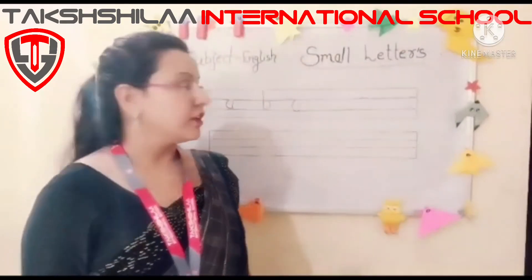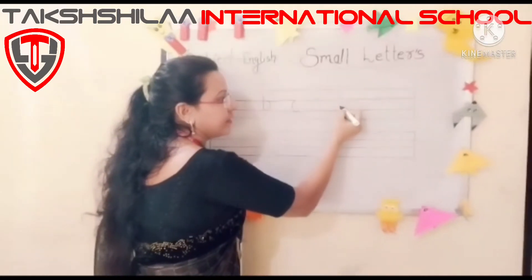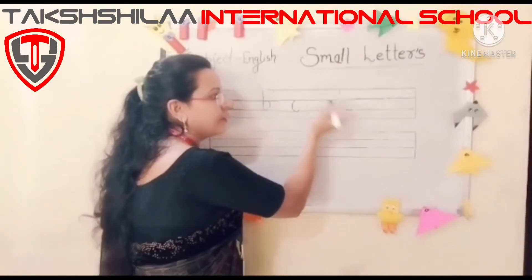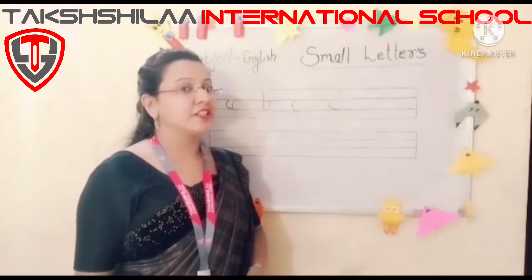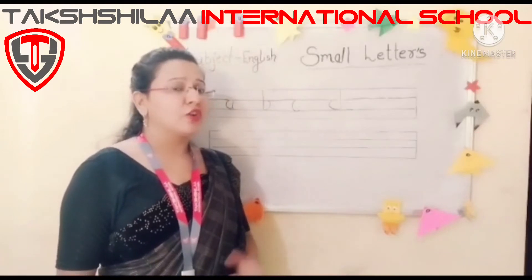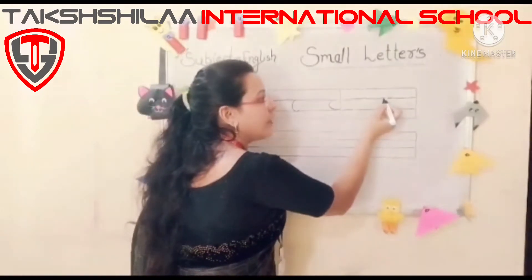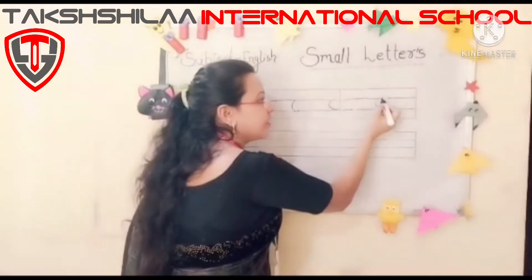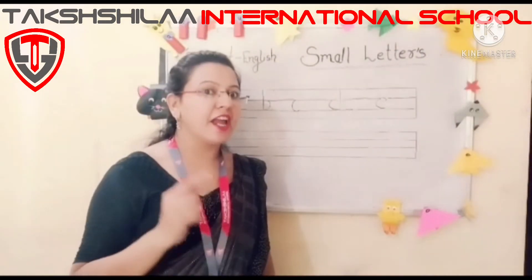Then D for dog — make a standing line, then curve. You have to use only three lines. Then E for elephant — how will you write E for elephant? Small curve in the middle of two lines, then small curve.